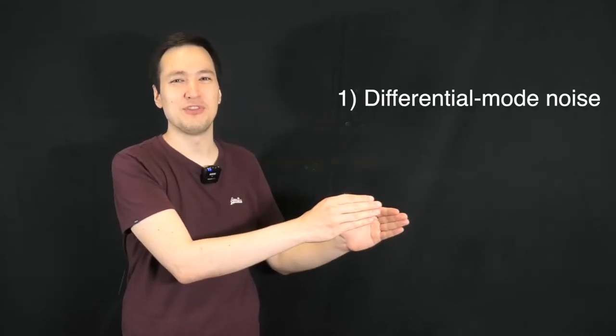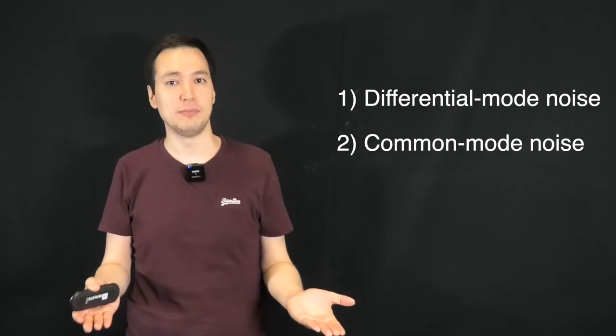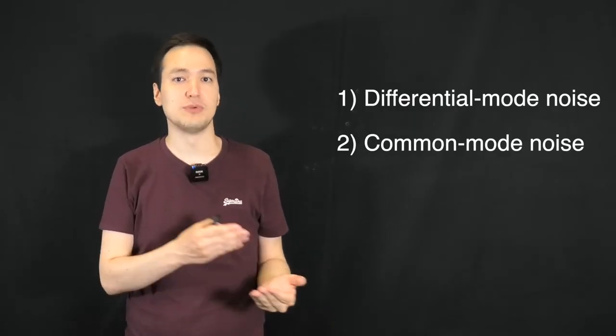When we talk about noise, the following two terms often come up: differential mode noise and common mode noise. But what does that actually mean? And what are the differences between the two?